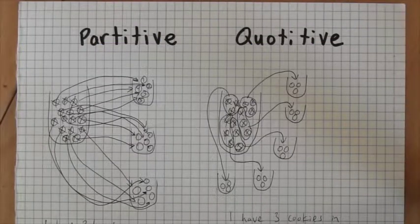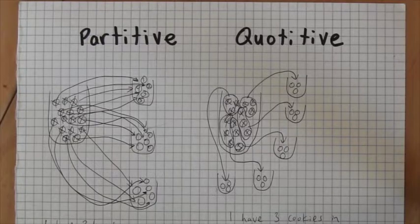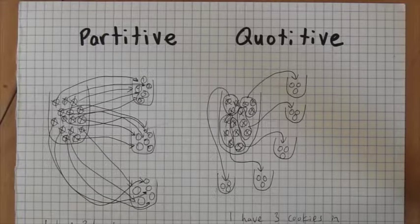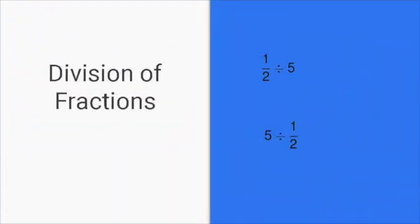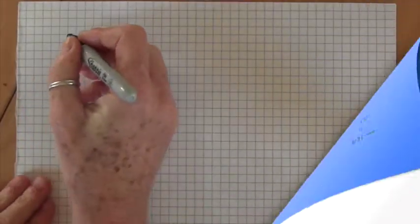It's important to know about partitive and quotative situations because even with whole numbers, it helps us understand real situations in which division arises. But when we turn to division of fractions, it becomes critical to understand quotative and partitive division. The first situation we'll look into is dividing a fraction by a whole number.